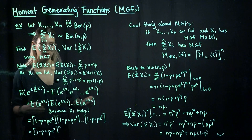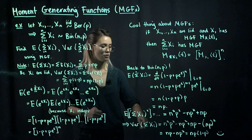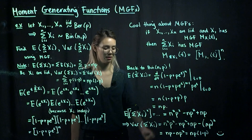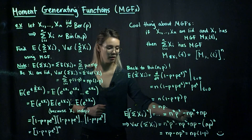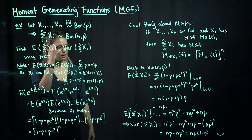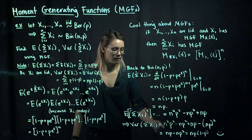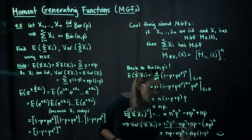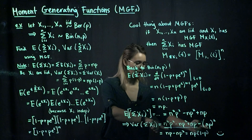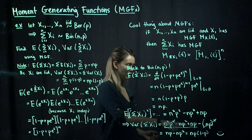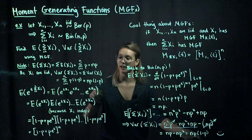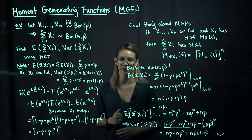Now for the variance, we follow a similar process and take two derivatives, then evaluate at t equals 0. The second moment works out to n squared times p squared minus n times p squared plus n times p. Using the formula variance equals the second moment minus the square of the first moment, we subtract (np) squared from the second moment. The n squared p squared terms cancel, leaving n times p minus n times p squared, which we can rewrite as n times p times (1 minus p). This is the variance for the binomial, which matches what we already knew — our work checks out.